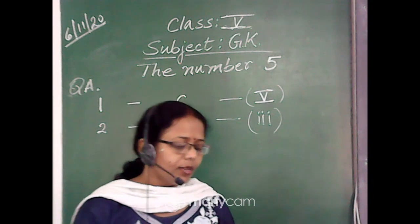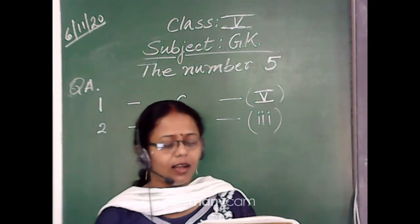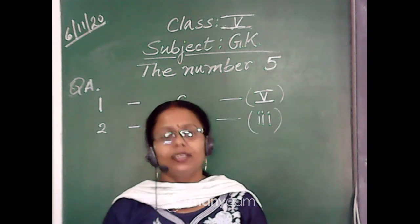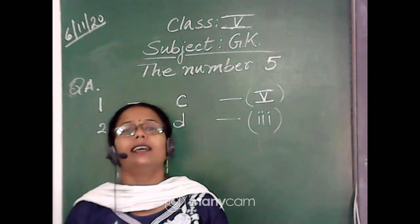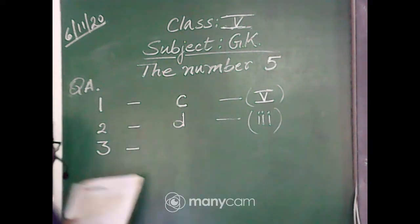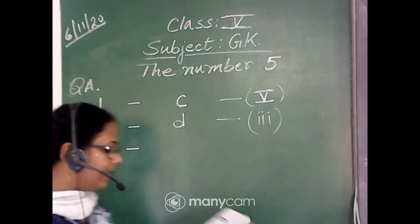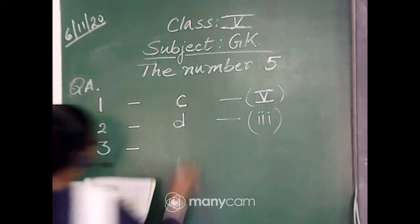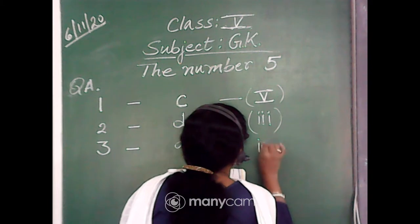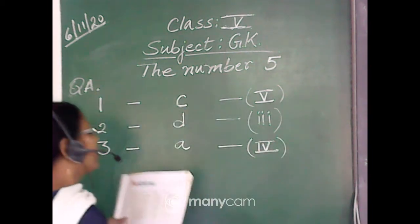Next comes the Jhelam, the Chenab, the Ravi, the Sutlej and the Beas — these are the 5 rivers, and that is why the region is called Punjab. So number 3 is matched with A, that is '5 rivers', and it is in Punjab — Roman numeral 4.